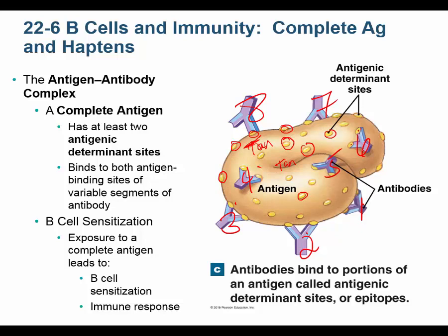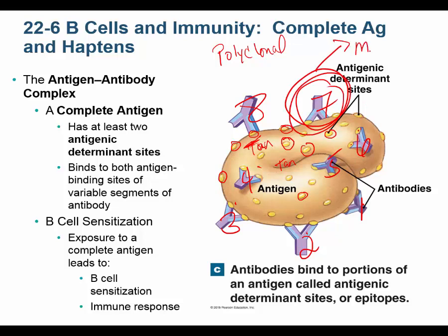All eight of those antibodies mixed together are called polyclonal antibodies because they're not the same — they come from more than one clone. But if you only have all antibodies against one specific epitope, say epitope seven, that's a monoclonal population. We have antigens with different epitopes or antigenic determinant sites, and we make antibodies to those antigenic determinant sites.